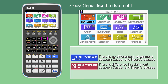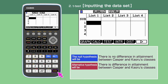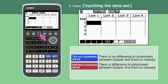Press the menu button to open the main menu, then move the cursor or press 2 to choose the statistics function. Press F3 to select hypothesis test. Press F2 to select T-test.